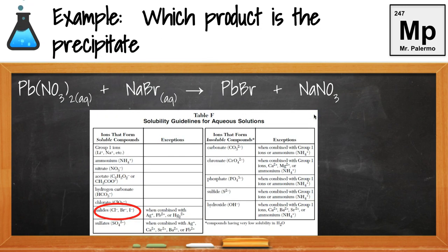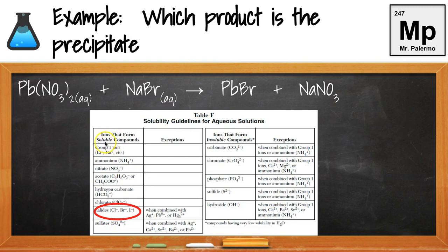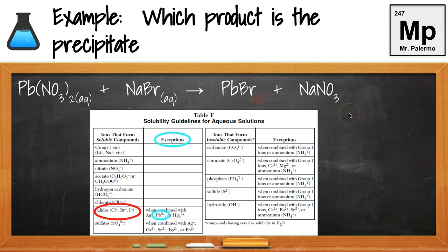Let's look at one more example: which product is the precipitate? We look at our products — we have PbBr2. I locate Br- on Table F. It's in the soluble column, but I look at the exceptions and see that Pb is listed as an exception. So it's no longer soluble — it's going to be insoluble. When placed in water it forms a solid, so I indicate that with an S for solid. The other product contains nitrate, and all nitrates are soluble, so that will dissolve and be labeled aqueous.